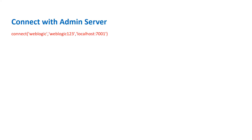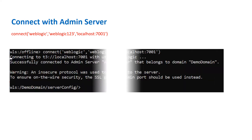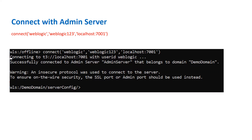To connect with the admin server, there is a command called connect(). In the connect command you have to specify three parameters: your username, your password, and the host on which your admin server is running along with the port. In my case the username is weblogic, password is weblogic, and it is running on localhost:7001. Once you run this command it will show you 'connected' and your prompt will change to the serverConfig prompt — showing your domain name followed by '/serverConfig', indicating you are connected to your running admin server.